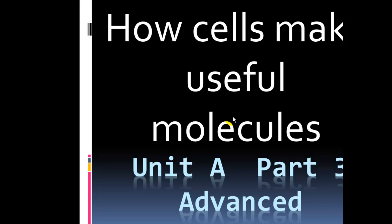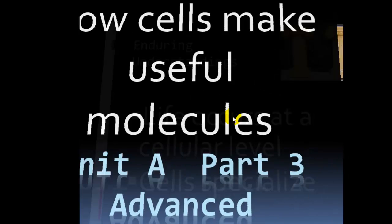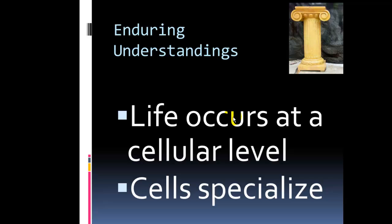Hi class, this is Ms. Sturley, and this is Unit A, Part 3, the last part to this unit. And in this screencast, we will describe how cells make materials that the body then uses. So how cells make useful molecules, and these molecules will be either proteins or they will be lipids, fats.